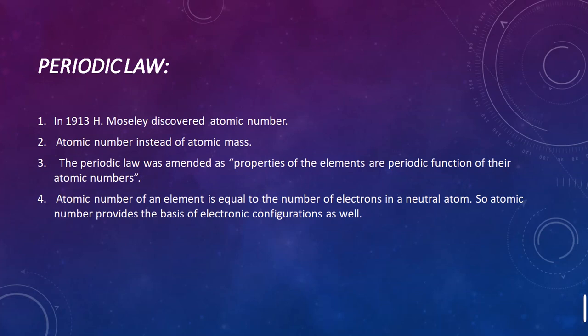The atomic number of any element equals the number of electrons in a neutral atom. The atomic mass, on the other hand, equals the number of protons plus the number of neutrons in an element. Based on electronic configuration and atomic number, Moseley classified elements such that their physical and chemical properties repeat periodically on the basis of atomic numbers, not atomic masses.